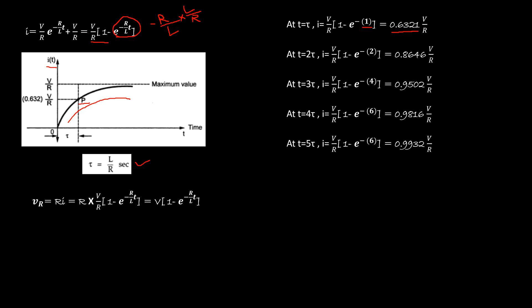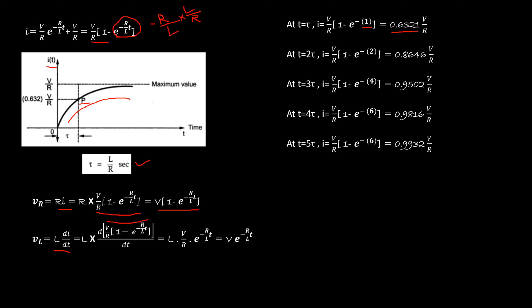Once you have the current expression, you can find the voltage drop across the resistor: V_R = Ri = V·(1 - e^(-R/L·t)). Similarly, you can find the voltage drop across the inductor using L·(di/dt) — simply replace I with the current expression. Once you have the voltage drop across the resistor and inductor, you can also find the power dissipations across the resistor and inductor. In this way, we can find the transient behavior of the circuit, which is very important to understand. I hope you understand — if you have any doubts, let me know. Thank you.